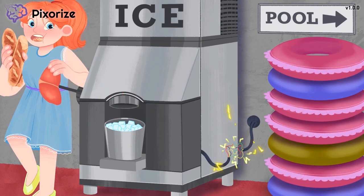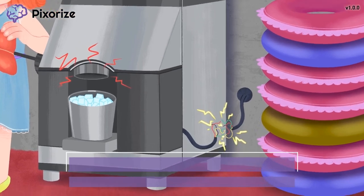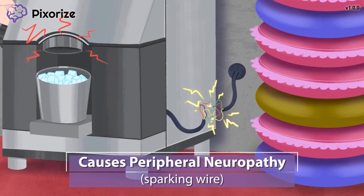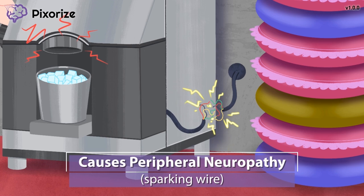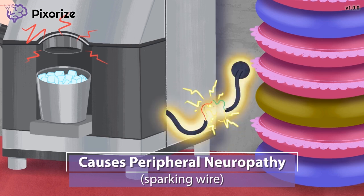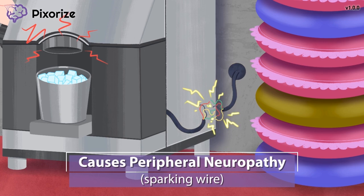The woman pulled the lever, but the ice machine stopped working. Take a look at that frayed, sparking wire — there's no way the ice machine is going to work with a wire like that. We use a frayed, sparking wire as our symbol for neuropathy, because nerves are kind of like wires. So a frayed wire can remind you of damaged nerves.